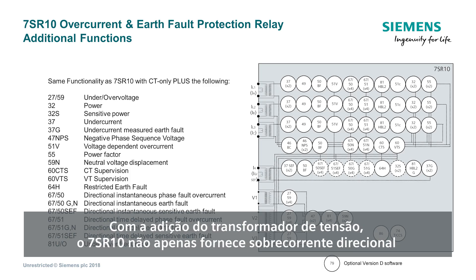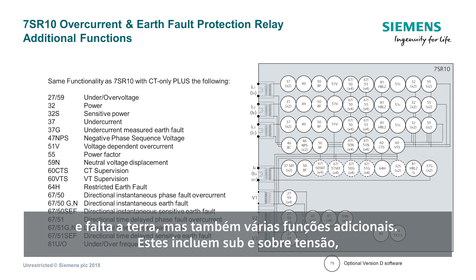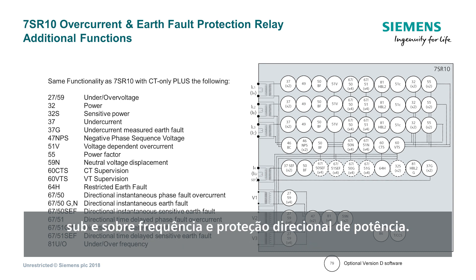With the addition of voltage transformers, the 7SR10 not only provides directional overcurrent and earth fault but a number of additional functions. These include under and over voltage, under and over frequency and directional power protection.